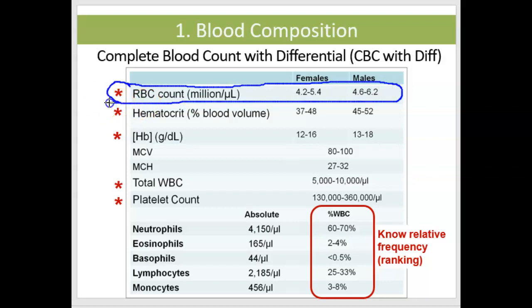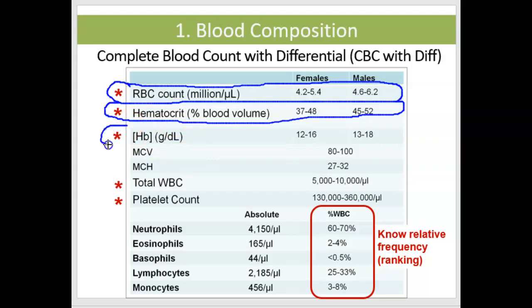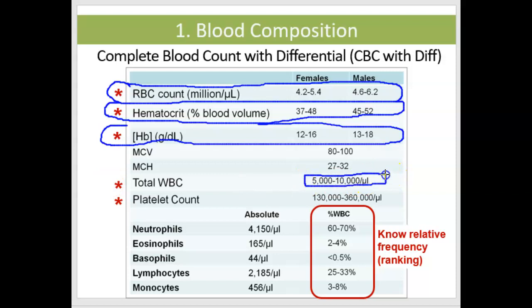For the hematocrit, you need to know normal hematocrit values and notice how they vary for males and females. You also need to know normal values for hemoglobin and the total white blood cell count, which is 5,000 to 10,000 white blood cells per microliter of blood. You need to know a normal platelet count as well, which is 130,000 to 360,000 platelets per microliter.